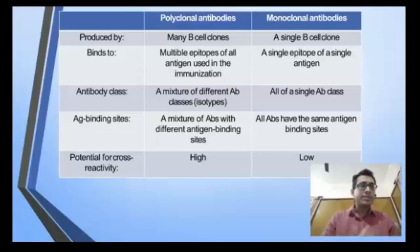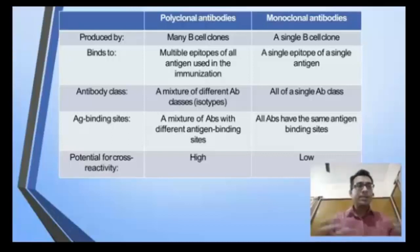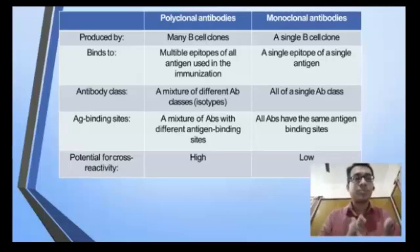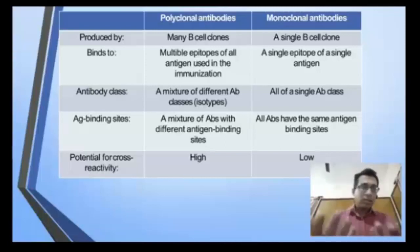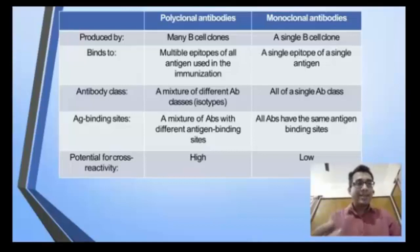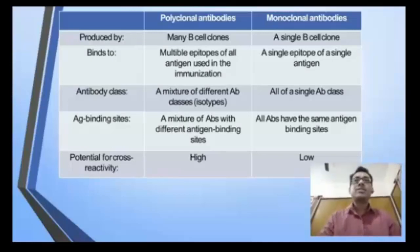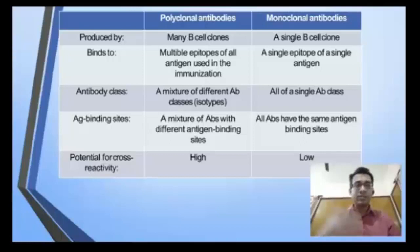Polyclonal antibodies come from different B-cell clones and bind to multiple epitopes — they are essentially multiple different monoclonal antibodies together, generated in response to any antigen. Polyclonal antibodies can be of different antibody classes and can cross-react with another antigen because they may share epitopes. Monoclonal antibodies, being specific for a single epitope, have a very low rate of cross-reactivity with other antigens.